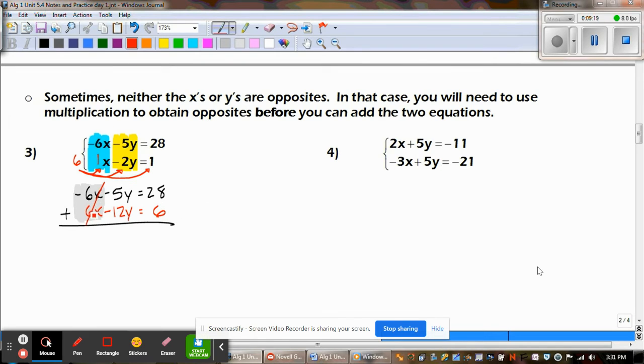Negative 6x plus 6x, those canceled just like we wanted. Negative 5y plus negative 12y is negative 17y. Equals 28 plus 6 gives us 34.